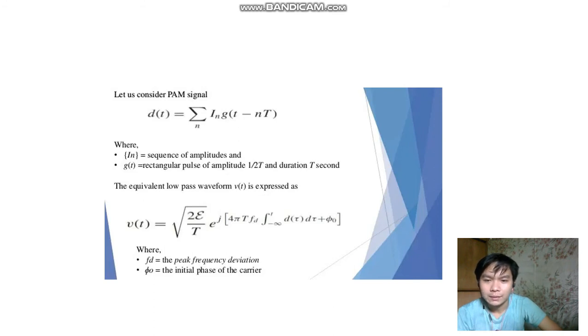The equivalent low-pass waveform v(t) is expressed as v(t) equals square root of 2E/T times e raised to j times 4πF_d T integral of d(t') dt' plus θ_0, where F_d is the peak frequency deviation and θ_0 is the initial phase of the carrier.